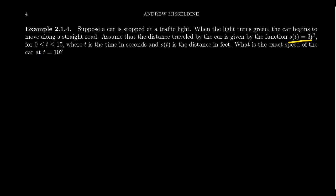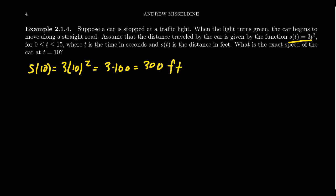What is the exact speed of the car at 10 seconds? This is a critical question. If we plug in t = 10, we find the distance: s(10) = 3 times 10 squared = 3 times 100 = 300 feet. So after 10 seconds, the car would have traveled 300 feet according to this model. But we don't want to know how far it's gone — we want to know its speed.